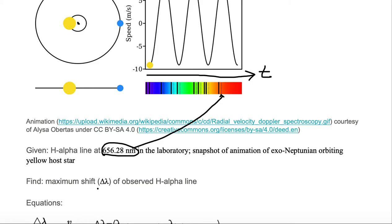We want to find the maximum shift, delta lambda, of this observed H alpha. So we want to find out what is this shift. That shift right there is delta lambda. So we want to find out that shift between those two lines.